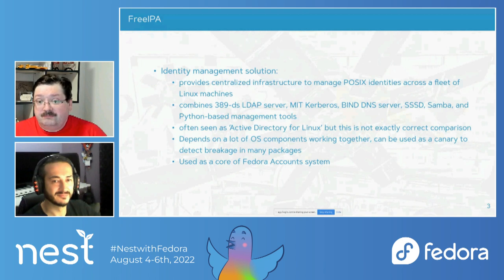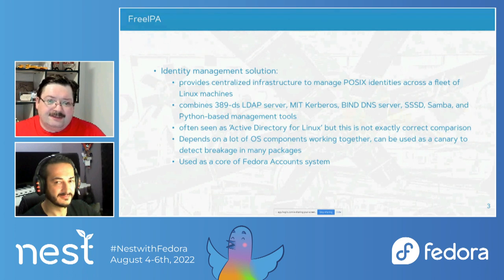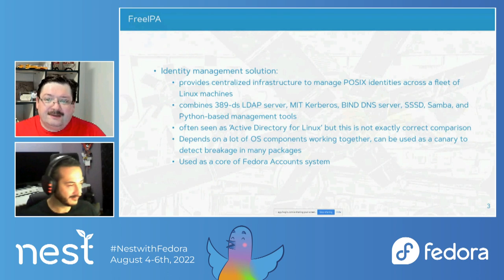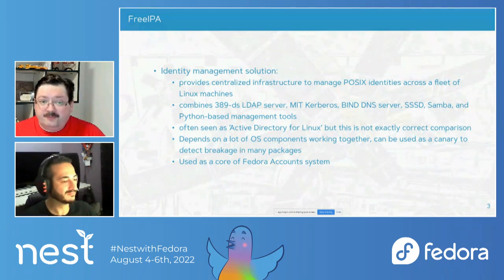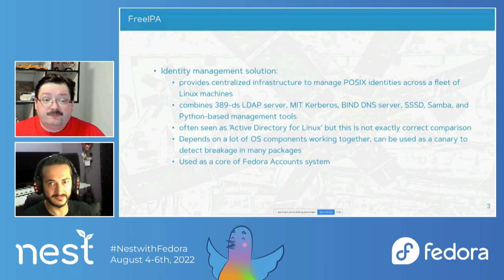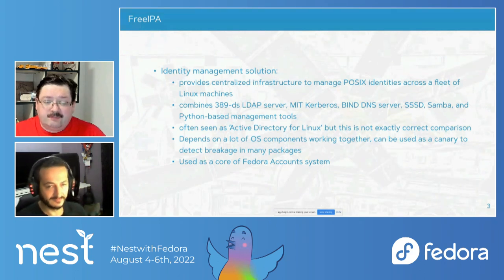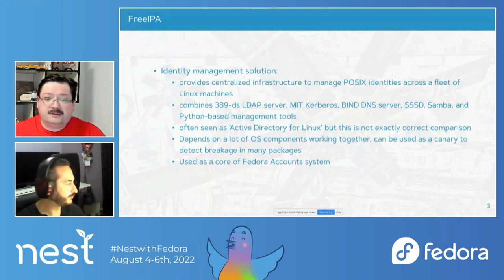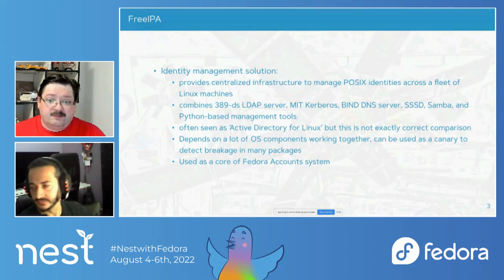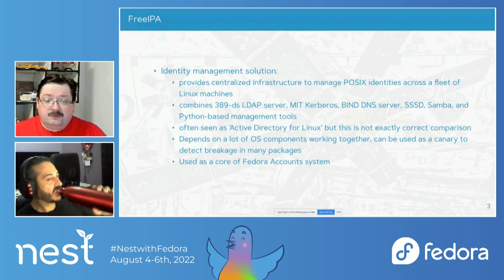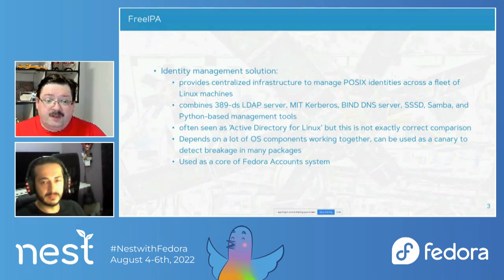FreeIPA itself is what we call an identity management solution. It's kind of hard to explain - some people often see it as an Active Directory for Linux, but that's not really an exact comparison. We try to provide centralized infrastructure to manage POSIX identities across a bunch of Linux machines, combining open source components like 389DS LDAP server, MIT Kerberos, Bind DNS server, SSSD, and Samba. We also have a bunch of Python code that constitutes the FreeIPA management tools.